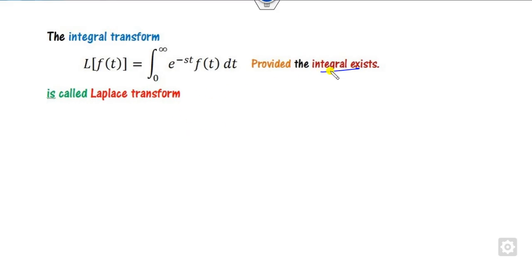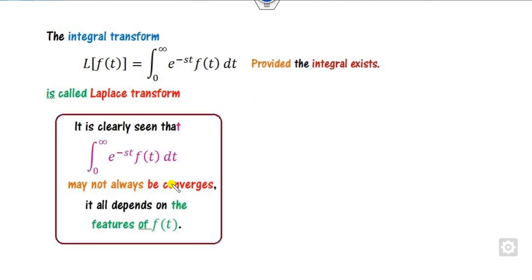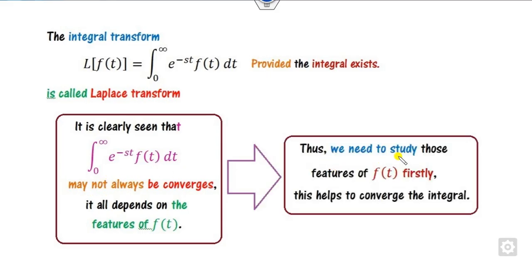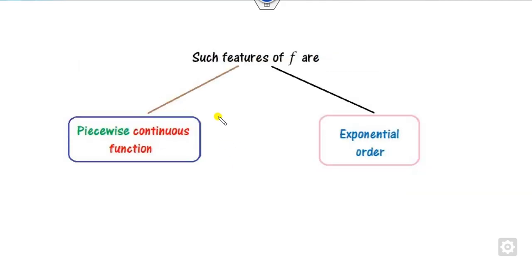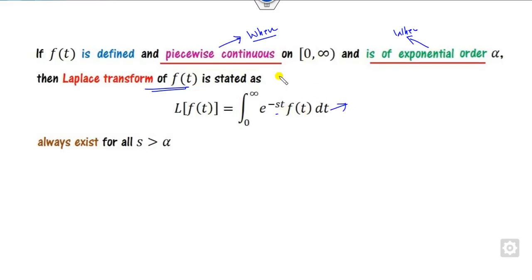Since the existence of the integral depends upon the properties of f(t), our curiosity is to know what features of f(t) will make this integration always converge. Remember, not for all f(t) does it converge. Our target is to study the features of f(t) that help converge the integral. There are two such features: piecewise continuity and exponential order. If any function f(t) satisfies these two properties, then this integration will exist.